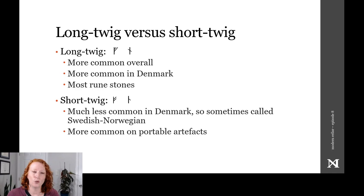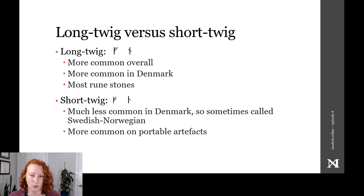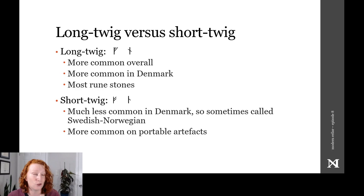The long twig runes are the more common type overall, and most rune stones tend to be written using this style of Younger Futhark, especially the Danish rune stones. Short twig runes are both faster and simpler than long twig runes, but these appear only very rarely in what used to be Viking Denmark. They appear more often in Swedish and Norwegian contexts, so some scholars have referred to them as Swedish-Norwegian short twig runes, but they definitely occurred in Denmark.